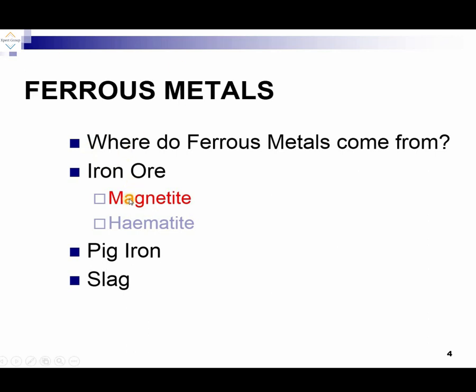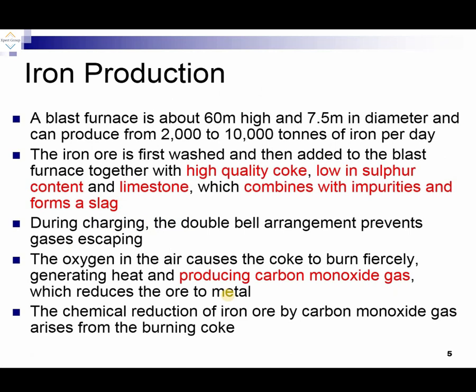When we purify magnetite and hematite we get pig iron, and at the end we get slag. For the production of iron from hematite and magnetite we use a blast furnace. There are different types of furnaces, but the most widely used is the blast furnace where we can produce iron.